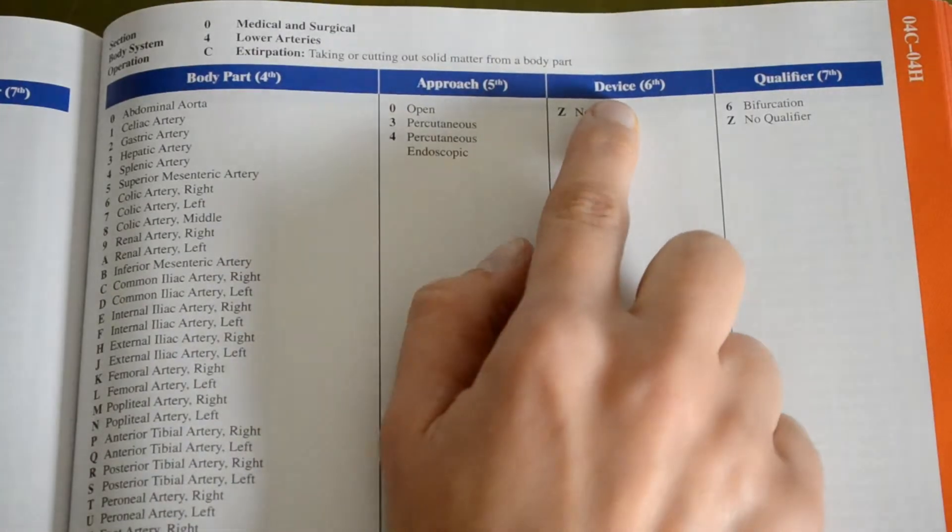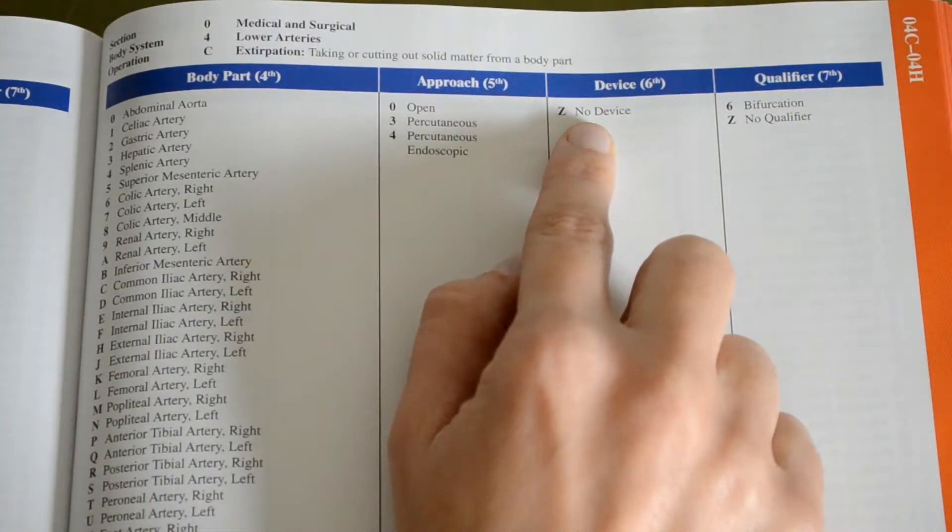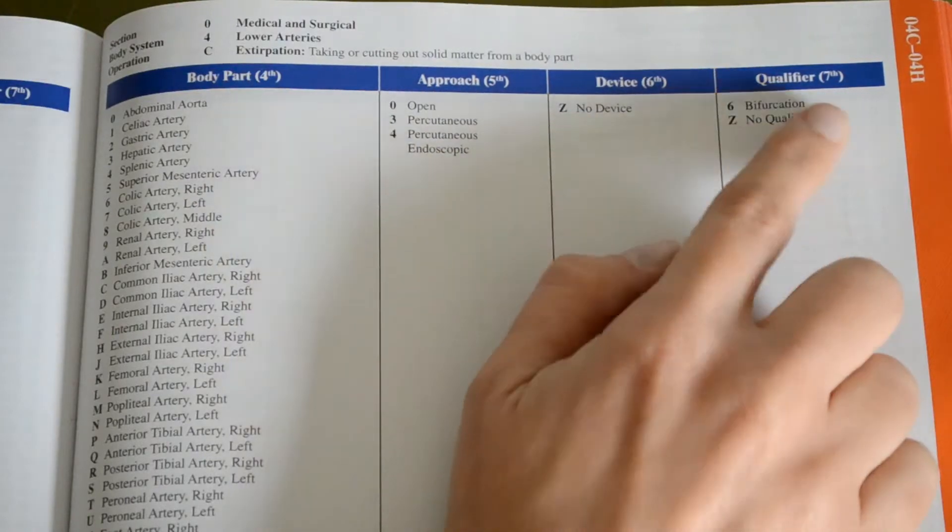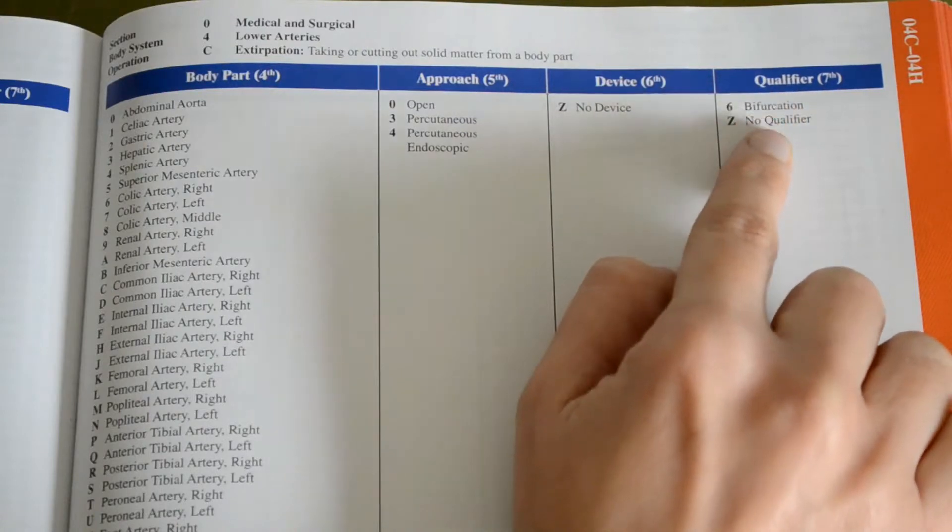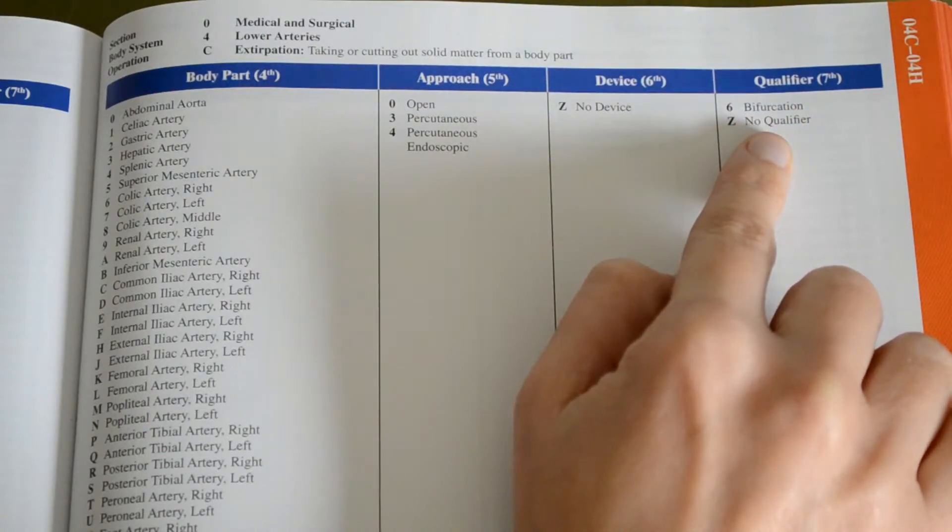The device column, or the sixth character placement, it says Z, no device. So we put a Z. And our qualifier, which is our seventh character placement, it gives two options, bifurcation or no qualifier. We are going to say no qualifier because the term bifurcation did not come up at all in our op report, so we would not choose that one. So Z, no qualifier.